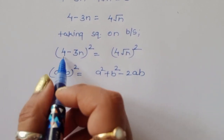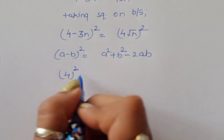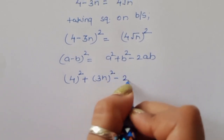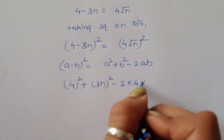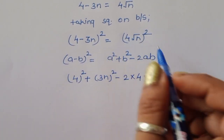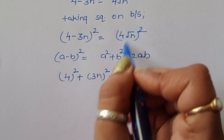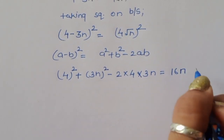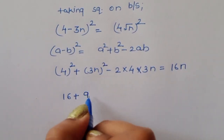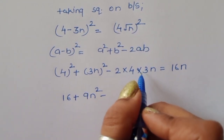Here a is 4 and b is 3n. So a squared is 4 squared, plus b squared is 3n squared, minus 2 times a times b. The right side: 4 squared is 16, and the square cancels with the square root giving 16n. So we get: 16 plus 9n squared minus 2 times 4 times 3n equals 16n, which gives 16 plus 9n squared minus 24n equals 16n.